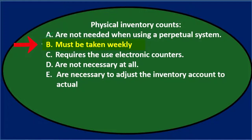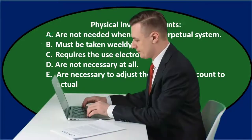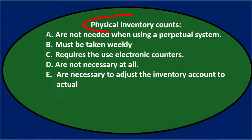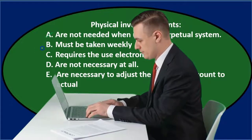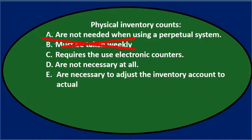B says physical inventory counts must be taken weekly. It really depends on the system we're going to have. We might be taking a physical inventory count daily, or even each shift, possibly for employee shift, or weekly, or possibly monthly. So it's not the case that we have to do it weekly — it just depends on the system. So it's not B.